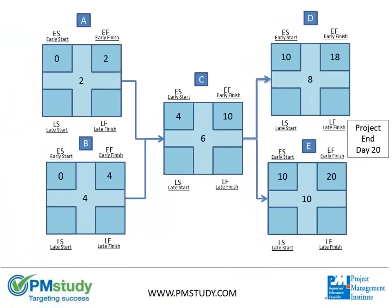Now we will go backwards through the schedule network diagram to determine the latest each task can start and end without increasing the project duration or impacting the successor tasks.